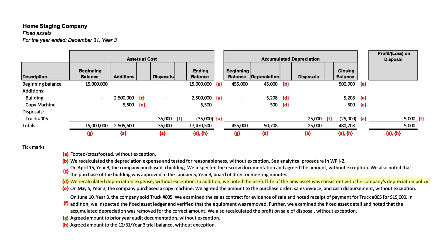D is the depreciation. We recalculated depreciation expense without exception and noted the useful life of the new asset is consistent with the depreciation policy. As an auditor, we love policies — if the company says, for example, we depreciate buildings straight line over 30 or 40 years, then as long as the policy is deemed reasonable and they follow it, whatever amount they calculate should be reasonable and appropriate as well.